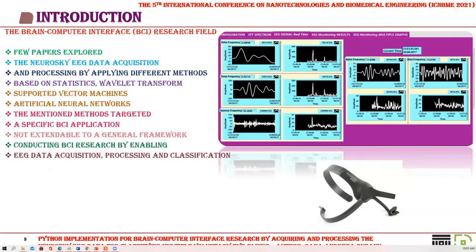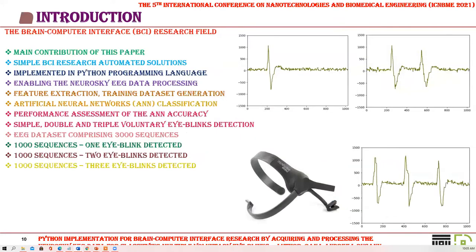The majority of previous scientific articles focus on calling off-the-shelf Neurosky libraries, providing convenient programming methods for simple BCI applications with technical limitations for advanced BCI research. Several thresholding-based algorithms determined the measurement of attention and meditation level and blink strength used as commands in a BCI. A few papers explored Neurosky EEG data acquisition and processing by applying methods based on statistics, wavelet transforms, support vector machines, or artificial neural networks. These investigations targeted specific BCI applications, not extendable to a general framework enabling data acquisition, processing, and classification. The main contribution of this paper is providing simple BCI research automated solutions implemented in Python to enable Neurosky EEG data processing, feature extraction, training dataset generation, and artificial neural network-based classification.